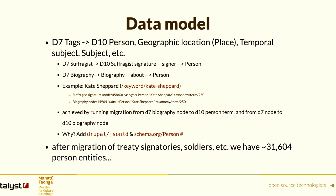An example is Kate Shepard: the suffragist signature node has the signer as the person entity Kate Shepard, and there's a biography node about Kate Shepard, but both map to the same taxonomy entity. We achieved that by running several migrations — one migration across biography nodes to build the Drupal 10 taxonomy terms for people, and another migration from the same material to generate nodes — multiple migration YAMLs with different destinations.